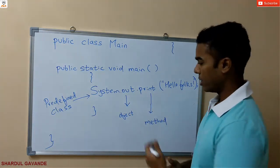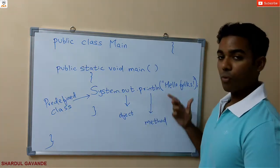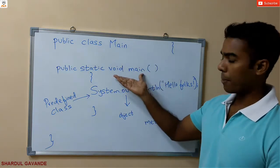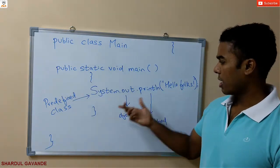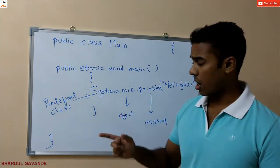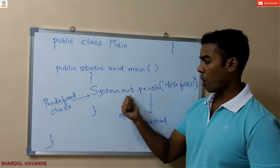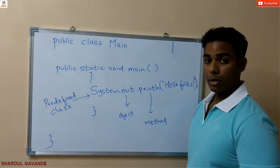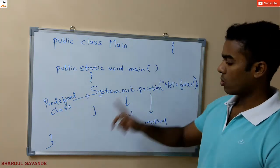And if you want to print on a new line, you just have to write println, and hello folks will be printed on a new line. So: public main class, then our main method which is declared as static and public because it should be accessible outside the class. And this is my statement — System.out.println — System is my predefined class, out is my object, print or println is my method. I am accessing this method using the object, with the dot operator. Then closing of my method and closing of my class.